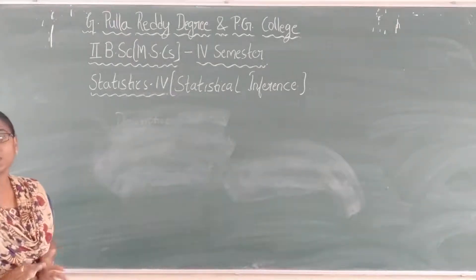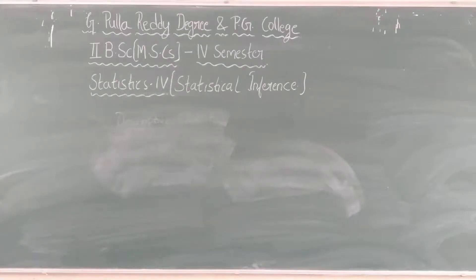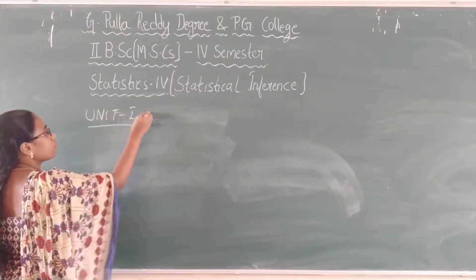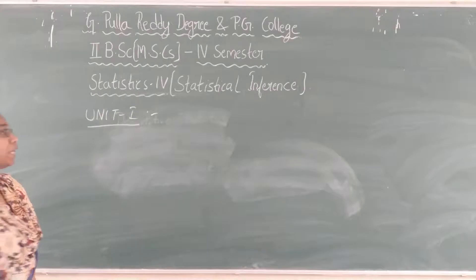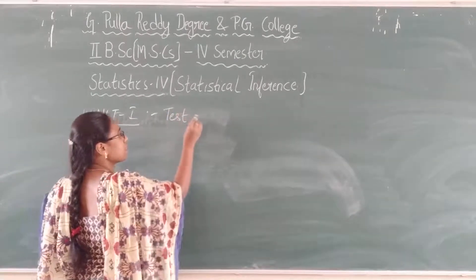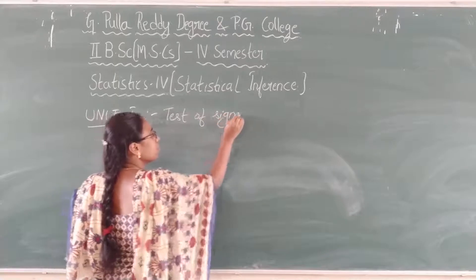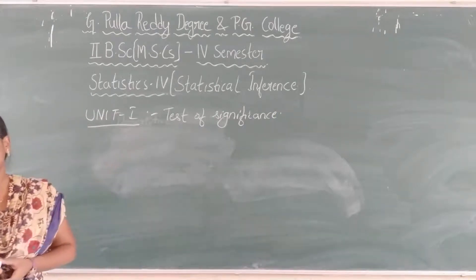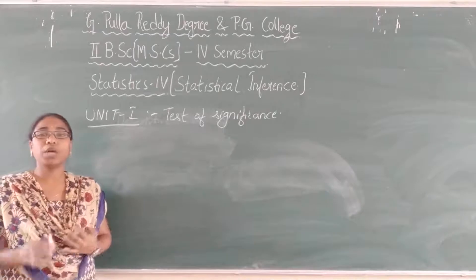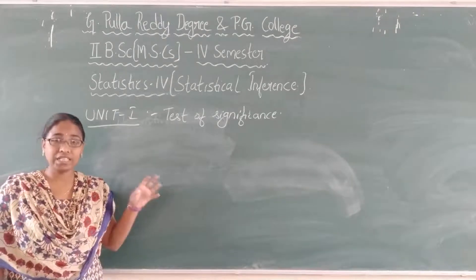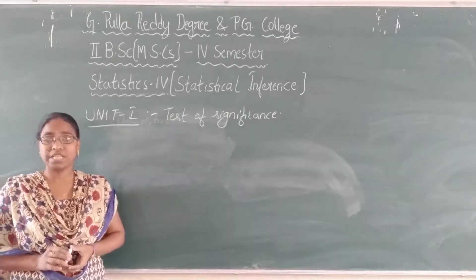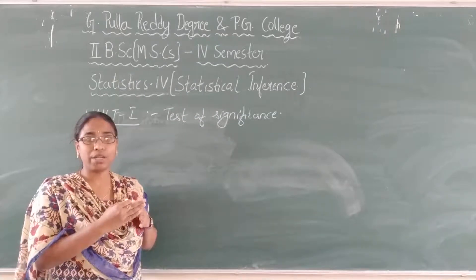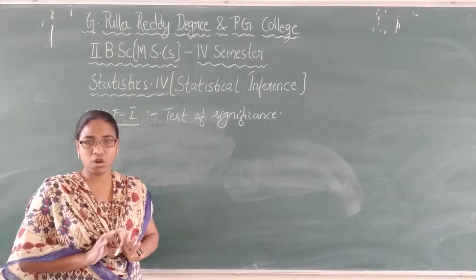Coming to the syllabus, in semester 4 we are going to have a total of 4 units. Unit 1 is related to the test of significance. In this first unit, we are going to study all the basic terms involved in the test of significance. Significance means we should have more than one value — we will be checking whether both are significant or not.